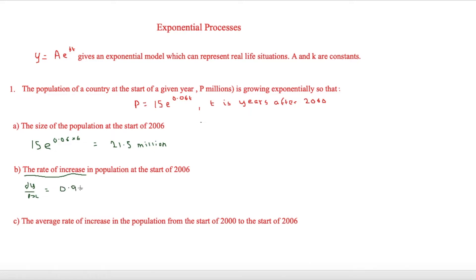That's 0.9e to the 0.06t. If you're confused about that, watch the last video which looks at how to differentiate things involving e. But then again, this is 2006, that's six years after. So if we put in six for t, we'll get 0.9e to the 0.06 times by six, and that equals 1.29 million per year. So the population is growing at 1.29 million a year in 2006.